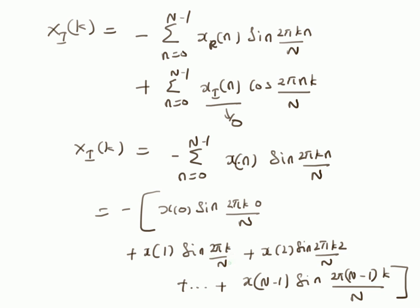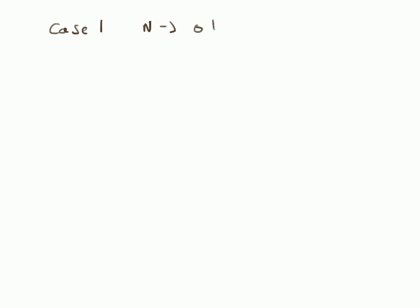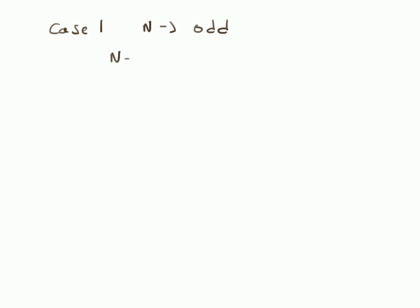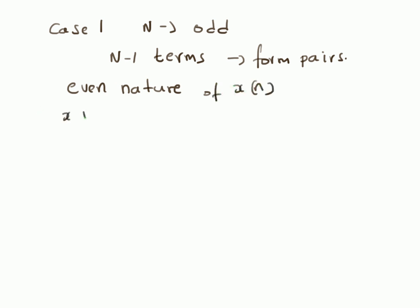Now let us look at the value of this summation for different values of N — specifically when N is even or odd. Case 1: N is odd. The first term is 0 because we have sin(0). The rest of the N-1 terms form pairs, since N is odd and N-1 is even. Based on the even nature of x(n), we have x(1)=x(N-1), x(2)=x(N-2), and since N-1 is even we have perfect pairs.